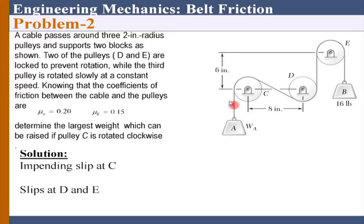Question: in problem number 2, why is the weight of block A greater than tension T2? Look at the problem statement - which direction is it rotating? It is rotating clockwise. That means you are applying a clockwise torque. To balance that clockwise torque I need a counter-clockwise torque. How do I generate a counter-clockwise torque? W_A multiplied by R minus tension on the other side multiplied by R. Therefore W_A has to be greater than the tension on the other side.